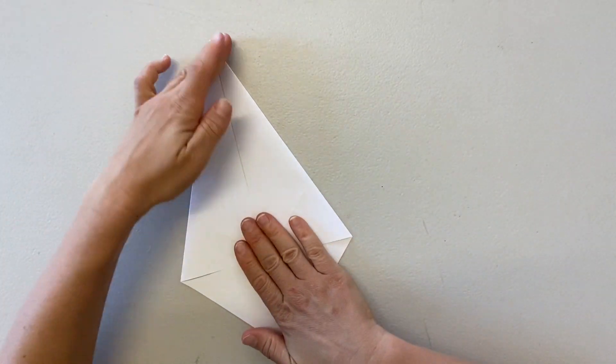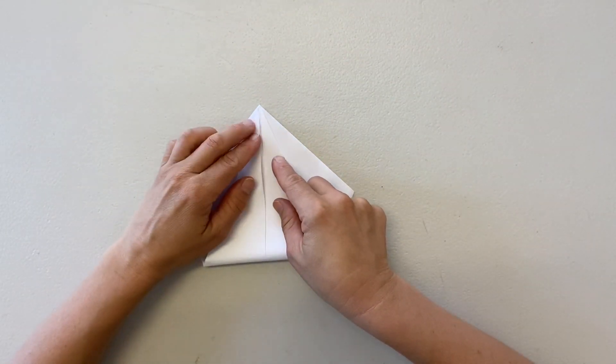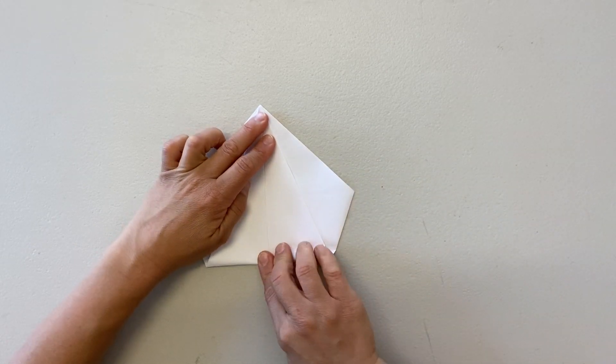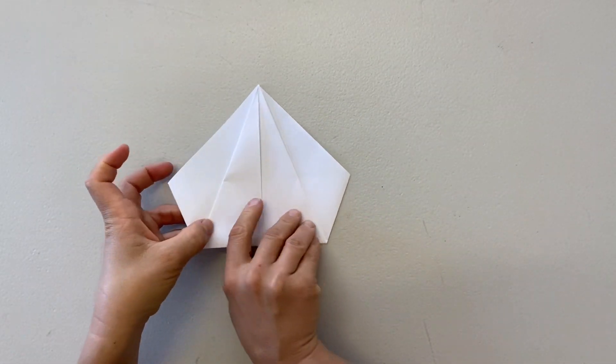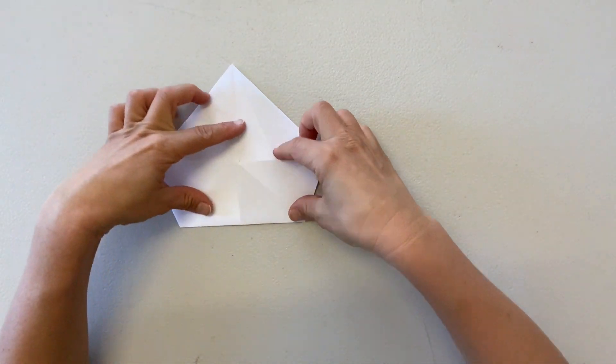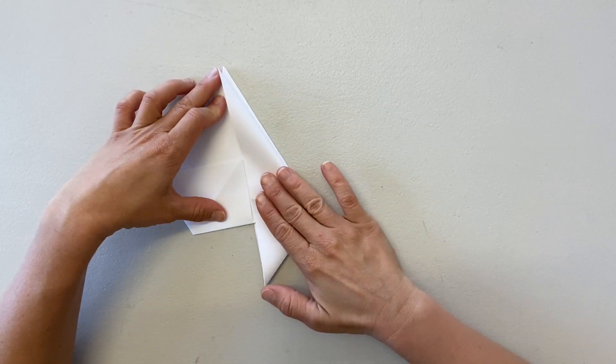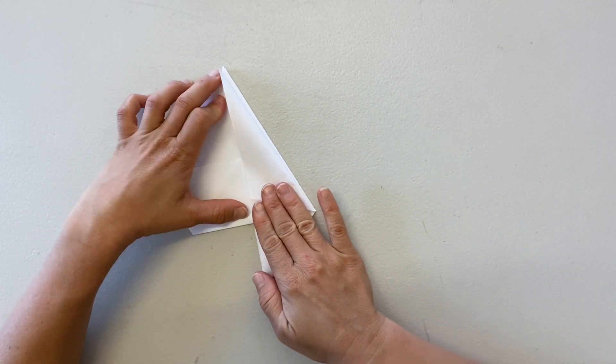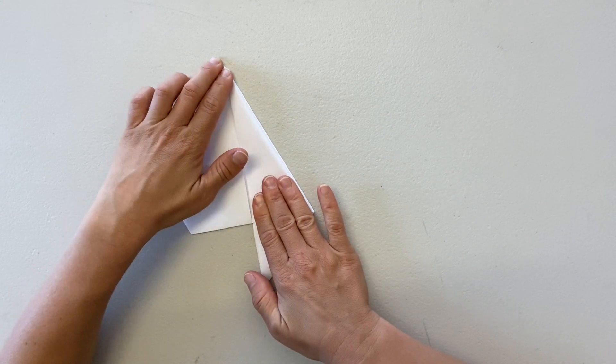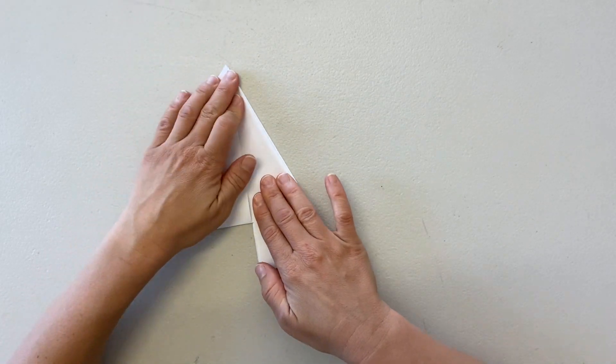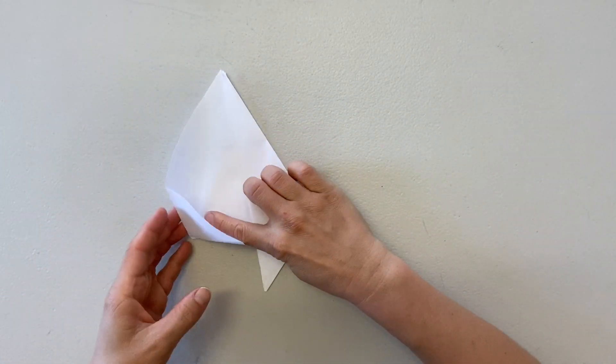Flip your paper over and fold the two furthest points together. Turn your paper back over and you'll see two little pockets. Pull one little pocket out and flatten the outer edge along the midline. Do the same for the other side.